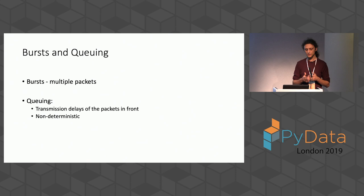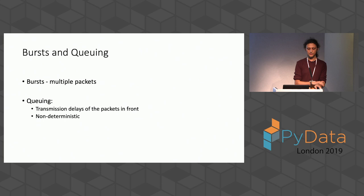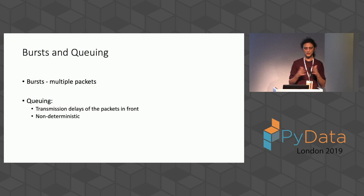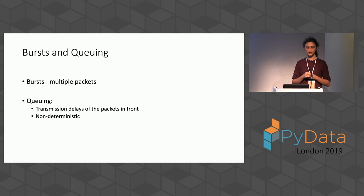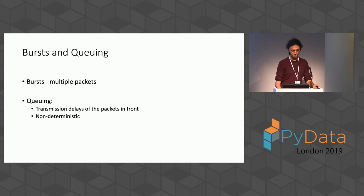We know there are bursts in the network, and these can involve multiple packets — which we can simulate as participant groups sending out a handful of packets. For queuing, normally you expect FIFO (first-in, first-out), but this property only holds to a certain time precision. If packets are really close together — within tens of nanoseconds — you can have reordering at the queue, so we add this non-deterministic effect into the simulation to make it more accurate.